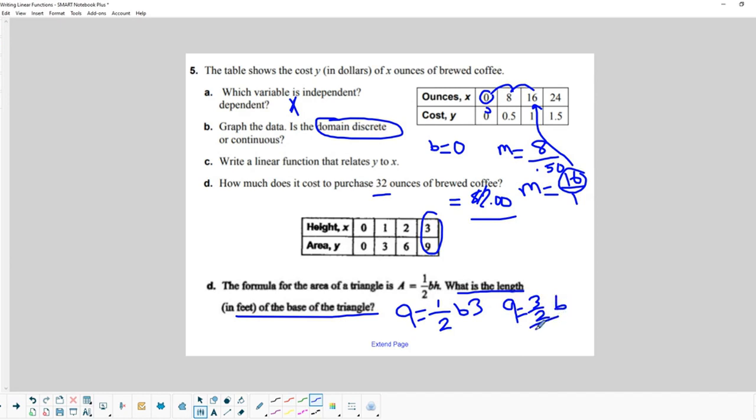So if I multiply 3 times 1/2, I get 9 equals 3/2 times the base. Or if I divide by 3 over 2 to get base by itself. So then I would flip and multiply. I would get 18 over 3. So the base in this case would equal 6. Because it would be 2/3 of 9. So what would be the length in feet of the base of the triangle? It would be 6.